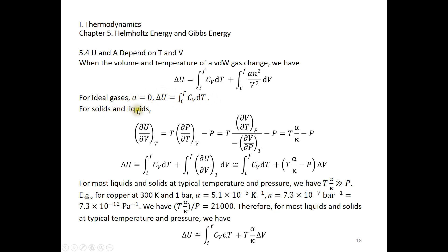For solids and liquids we use the same expression starting from dU = T·dS - P·dV and the Maxwell relation δS/δV = δP/δT at constant temperature. We can show that δP/δT at constant volume equals α/κ for all substances, using the triple product rule and reciprocal rule. Rewriting δP/δT as (δV/δT)/(-δV/δP) gives V·α divided by V·κ, so the result is T·α/κ minus P.